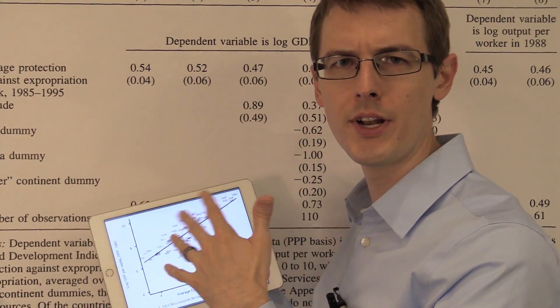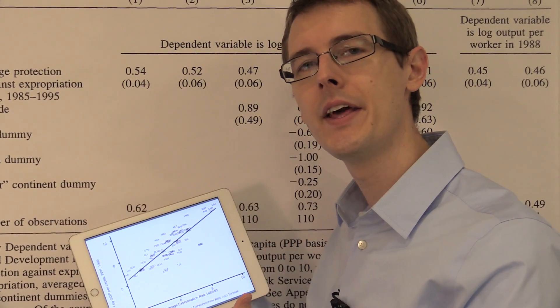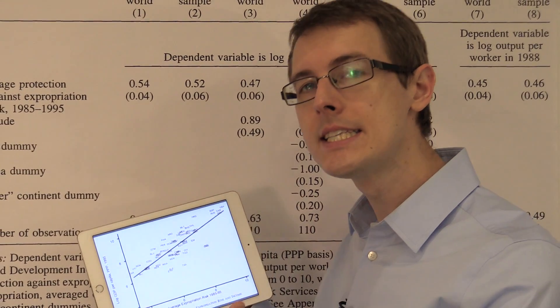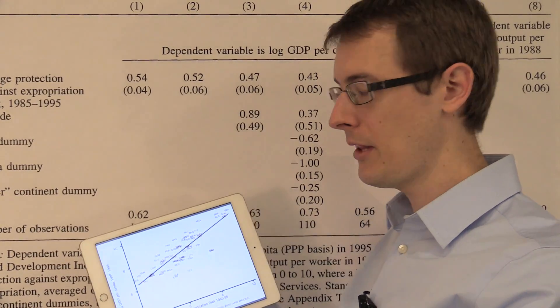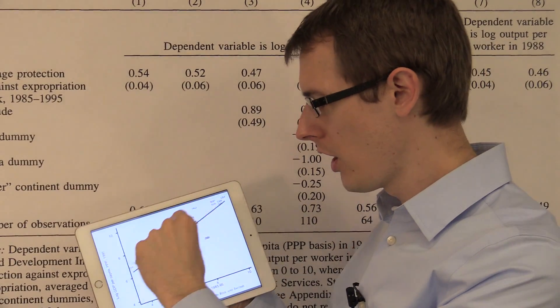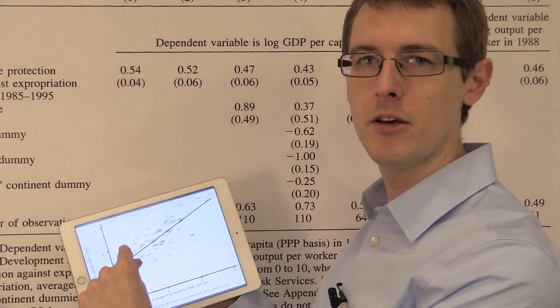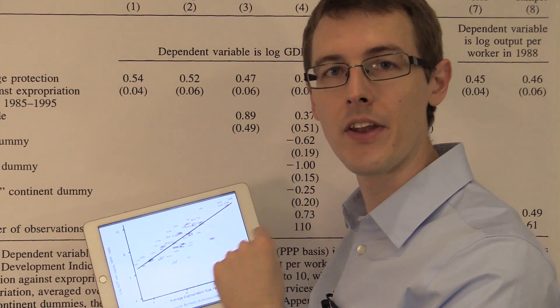Do this over and over again for a whole bunch of different lines and pick the line that gives you the least squares. That minimizes all of those squared distances between these data points and the line.